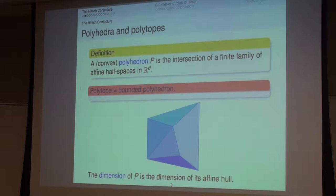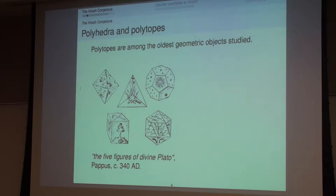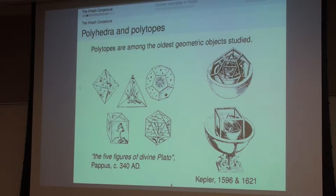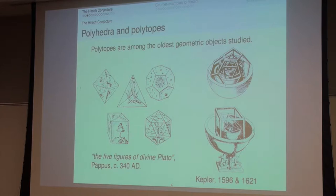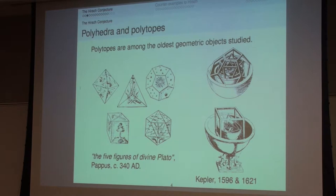Studying polyhedra is something mathematicians have been doing for more than 3,000 years. These pictures come from one of Kepler's books, about 300 years old, and they represent two models of the universe based on polytopes. The Greeks and Kepler both had models based on regular polytopes. Plato associated the four elements plus the ether to regular polyhedra, and Kepler's first model of the solar system had the ratios between planetary distances governed by how different regular polyhedra fit into one another.